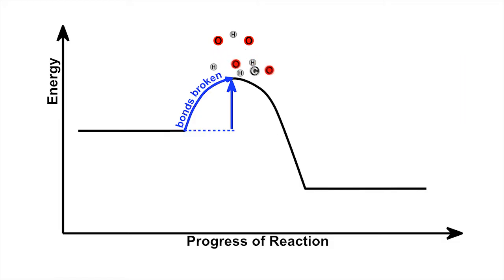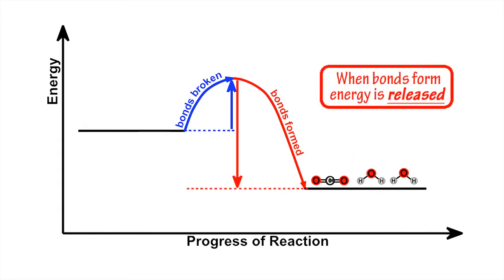In the formation of carbon dioxide and water, chemical bonds must form between carbon and oxygen and likewise between hydrogen and oxygen. When chemical bonds form, energy is released.